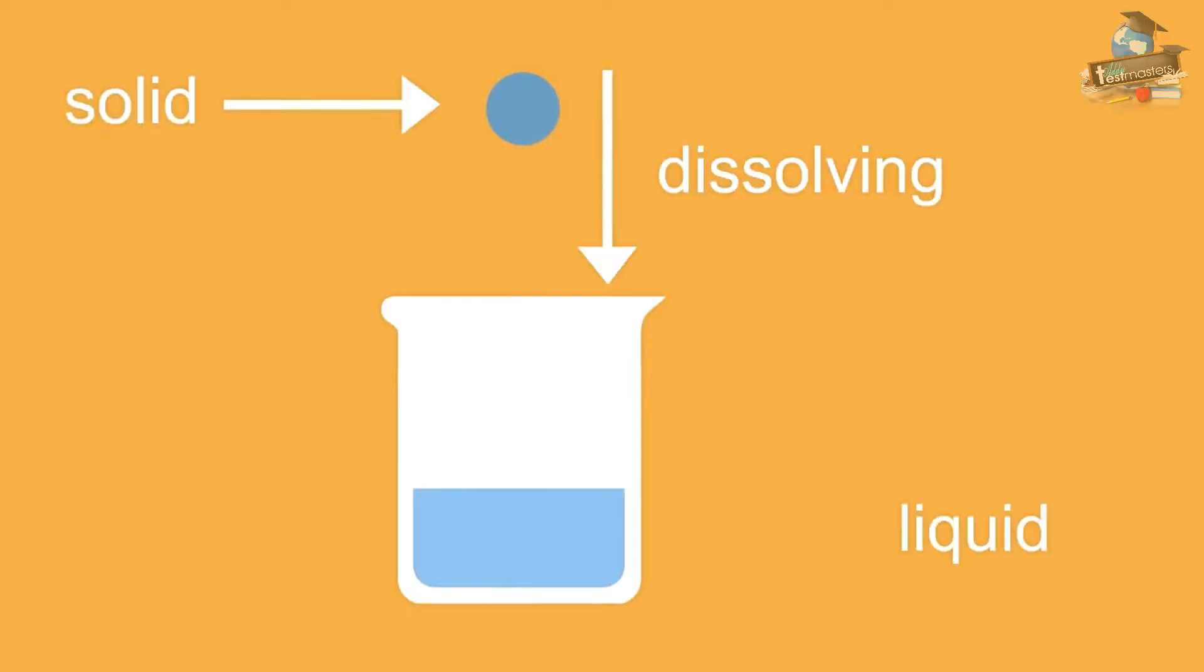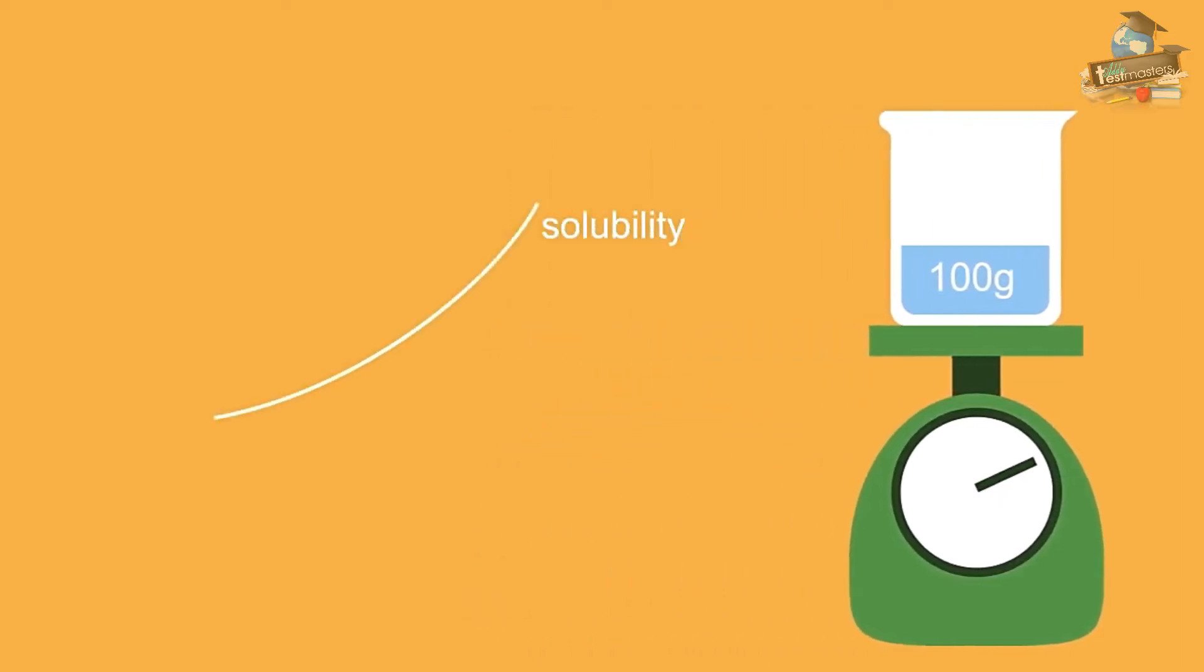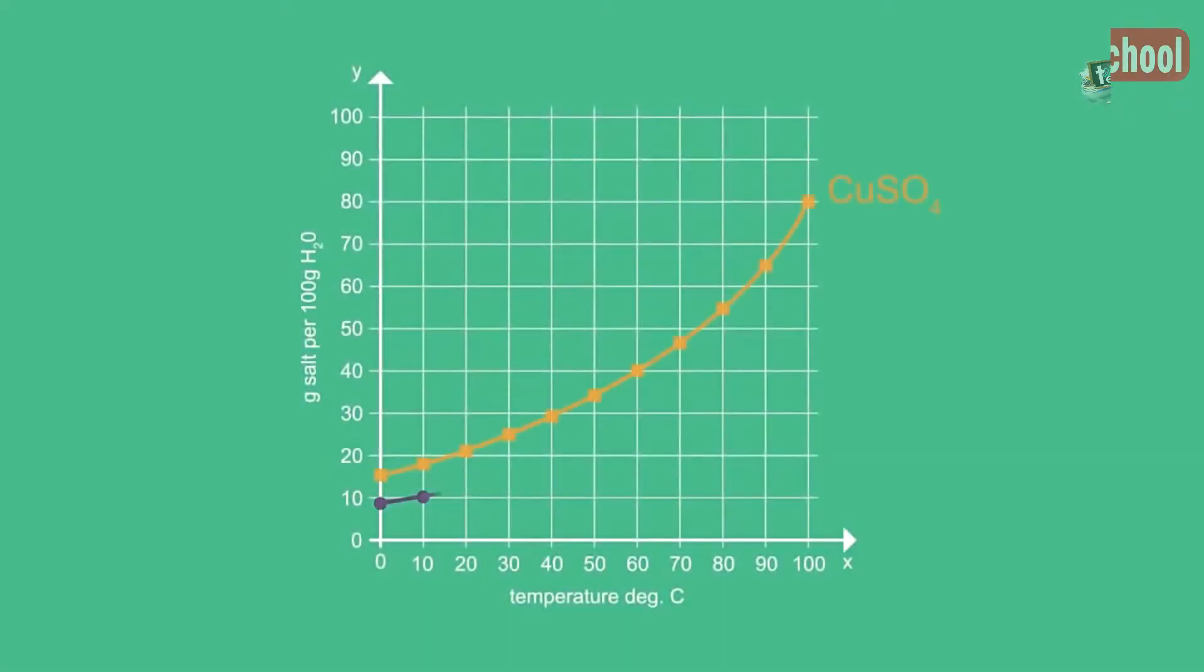We can measure how much of a given salt can dissolve in 100 grams of water at a certain temperature. We can plot solubility as a function of temperature to give a solubility curve. Here are solubility curves for copper(II) sulfate and potassium sulfate. We can see that for all temperatures, copper(II) sulfate is more soluble than potassium sulfate.